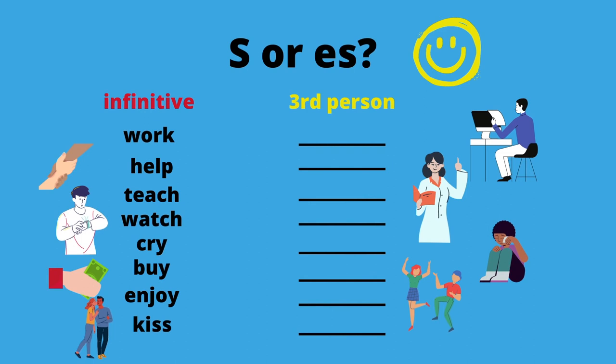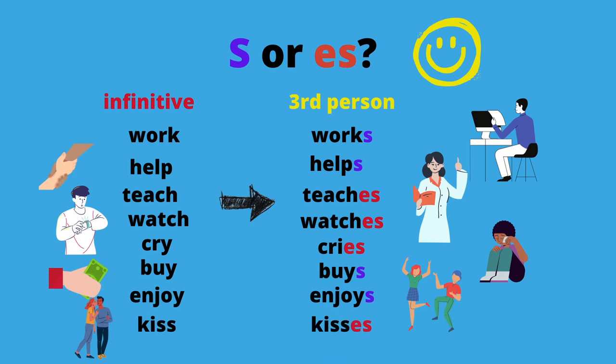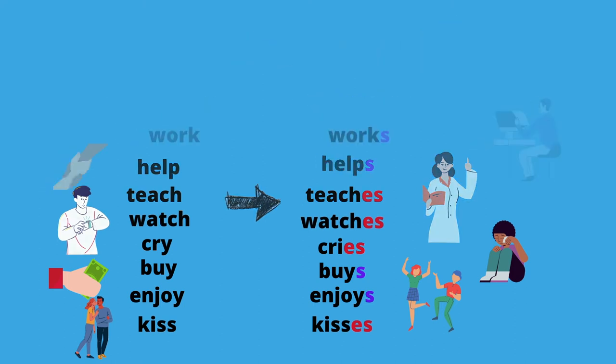Next exercise: is the third person formed with an S or with an ES? Feel free to pause the video and think of the rules we talked about earlier. Answers: 'work' — works; 'help' — helps; 'teach' — teaches; 'watch' — watches; 'cry' — cries (E-I-E-S); 'buy' — buys (just an S); 'enjoy' — enjoys (just an S); 'kiss' — kisses (ES). That's why we do those exercises.